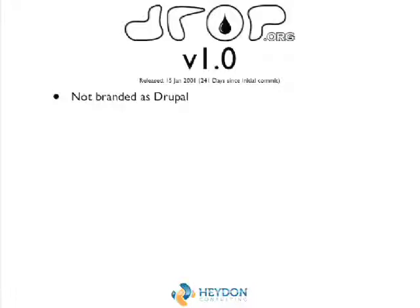Drupal 1 was the first release. It was released on the 15th of January 2001, and as you can see from the logo at the top, it was not yet branded as Drupal.